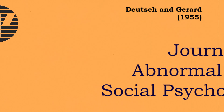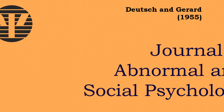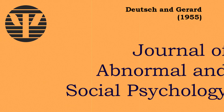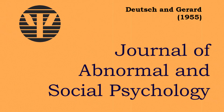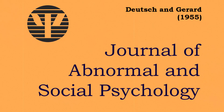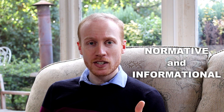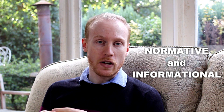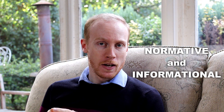Today we're going to look at a model called the dual process model, put forward in 1955 by Deutsch and Gerard. They suggest that there are two ways that social influence works: normative social influence and informational social influence.